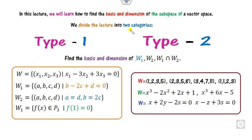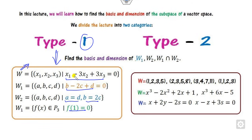In this lecture, we will see how you can find the basis and the dimension of the vector space, which is divided into two categories. The first category is where you have to find the dimension and basis of subspaces W where some condition is imposed — for example, finding all four-tuples A, B, C, D such that a given condition is satisfied. Type 2 is where we find the basis and dimension of a vector space or subspace W with no condition imposed.